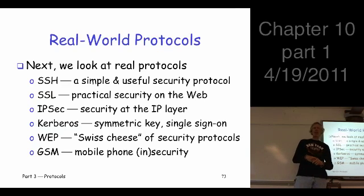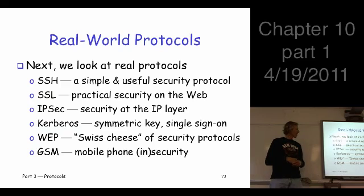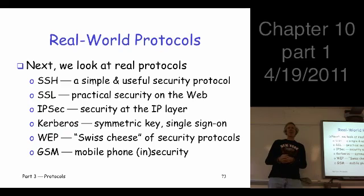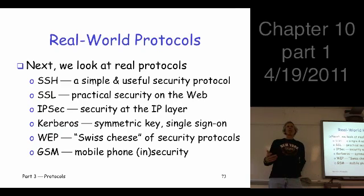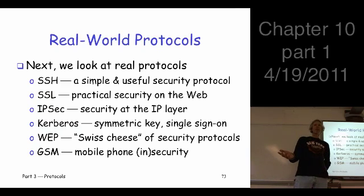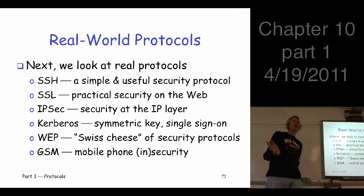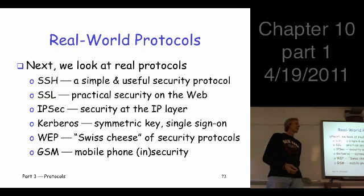SSL is actually a pretty nice protocol — not too complex. But IPSec is different. The purpose is basically the same as SSL, but the complexity is much greater, so we have to spend quite a bit of time talking about IPSec. And then Kerberos — it's something really different. All these other protocols are essentially relying on public key cryptography and they use nonces. Kerberos is different: it relies on symmetric keys and it uses timestamps. It's widely used as well — it's available in Windows and used a lot on your local area network to secure transactions there.